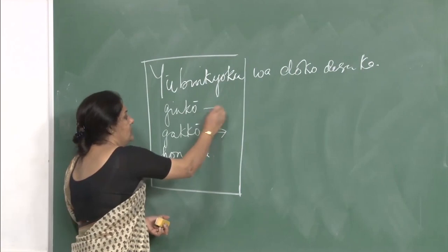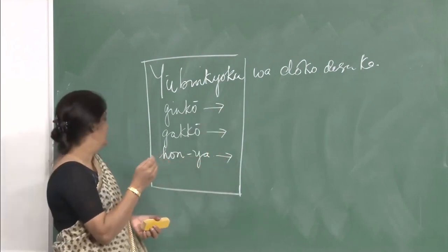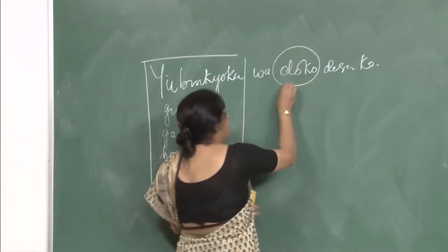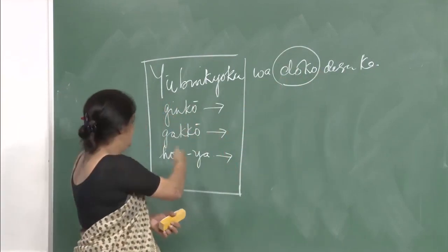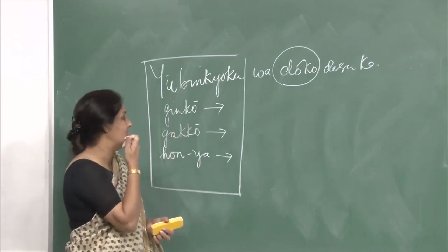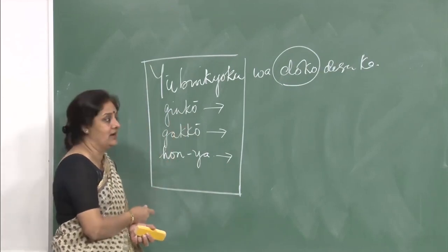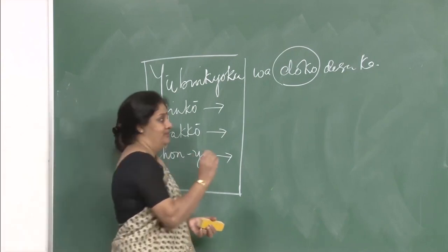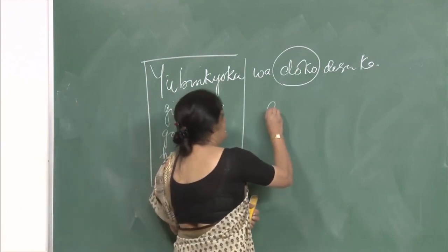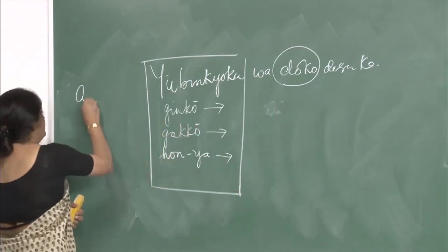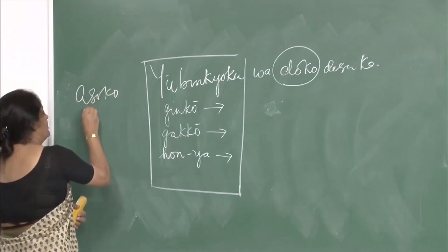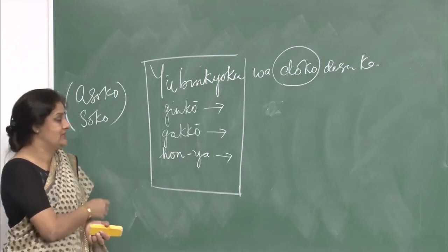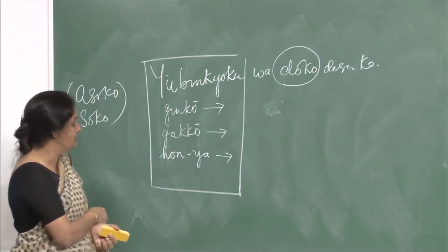Gakkou is school, ginkou is bank, and honya is a bookshop. You can ask where these things are — where is the ginkou, where is the gakkou, where is the honya? The answer could simply be asoko or soko. But today we will do something new.